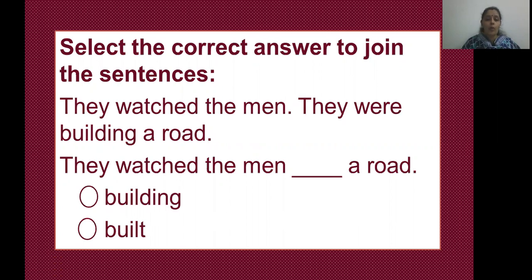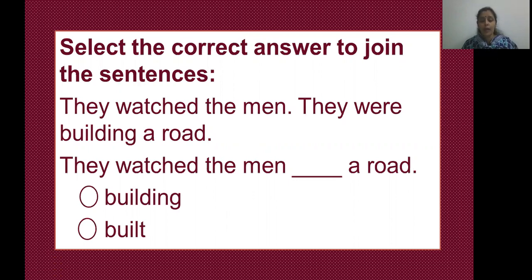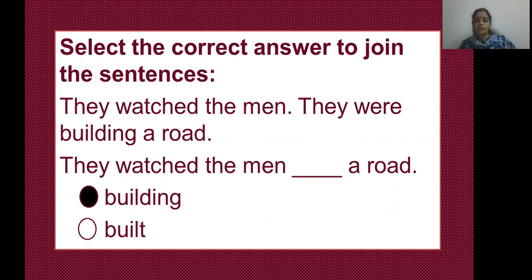The sentences are: 'They watch the men. They were building a road.' These are the two sentences we are going to join. They watch the men dash a road. The options given are 'building' and 'built'. Select the correct option to join these two sentences. Yes — they watch the men building a road.